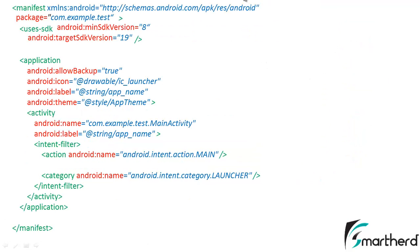Now let's check out the code that the manifest XML file contains. First is the schema that you have to define — it is also auto-generated, you don't have to write it. This is the package name that you defined initially while making the application.